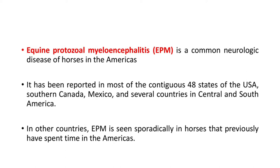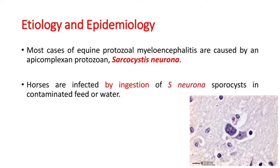Equine Protozoal Myeloencephalitis, or EPM, is a common neurologic disease of horses in the Americas. It has been reported in most of the contiguous 48 states of the USA, southern Canada, Mexico, and several countries in Central and South America. In other countries, EPM is seen sporadically in horses that previously spent time in the Americas.